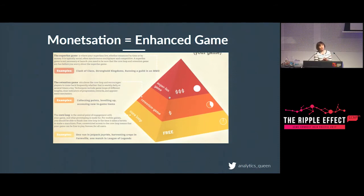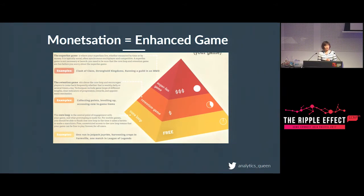So how do you design for it? I really like the Games Brief Pyramid System — you can search 'Games Brief Pyramid' and find the same graph. When you design a free-to-play game, think about it as three layers. The first layer is your core loop. It should be free — everybody should be able to play it. Don't block them from it, don't charge them for it. Everybody should earn enough through in-game currency or other rewards to be able to play it forever.